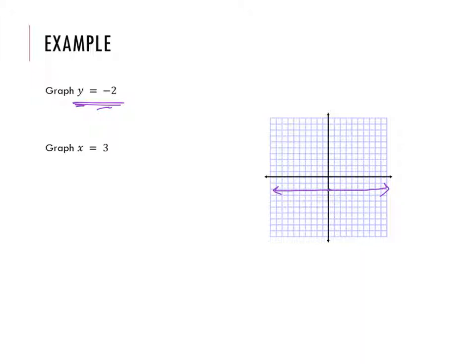The other graph, x equals 3. So I'm going to start on my x axis and go to 3. And then where's the line where every single x is 3? Oh, I just go up and down forever. All of those ordered pairs there have an x that's 3.